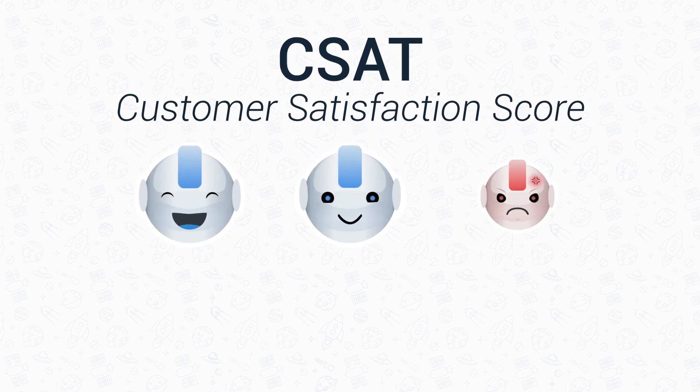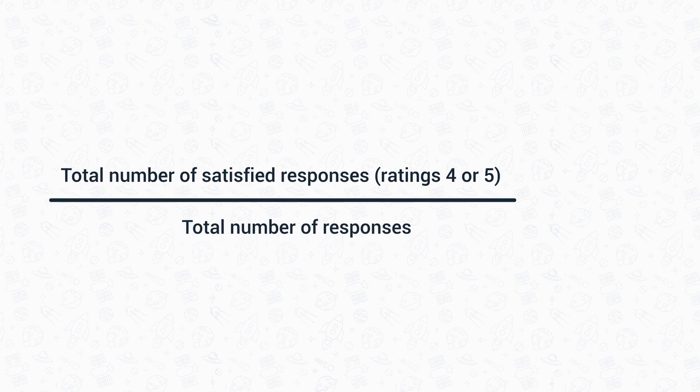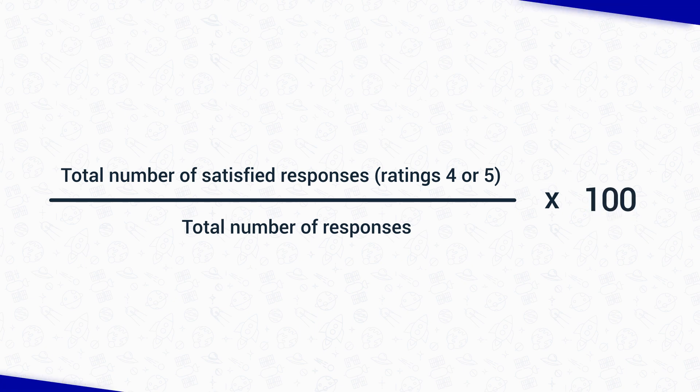CSAT is like asking your friend if they liked a new Como release and they say, 'hell yeah.' So what you would need to ask your customer is, 'How satisfied were you with the product or service?' In order to calculate CSAT, you'll need to divide the total number of satisfied responses — customers who give you four or five — by the total number of responses, and then multiply this number by 100.